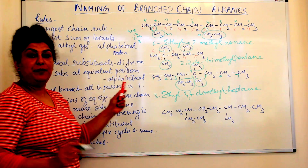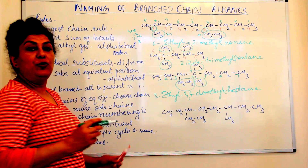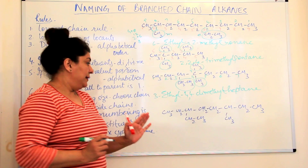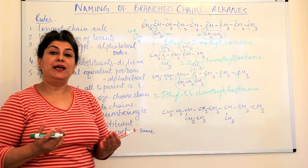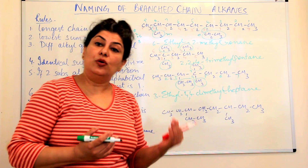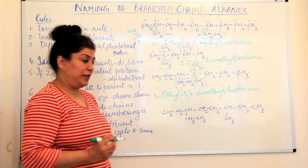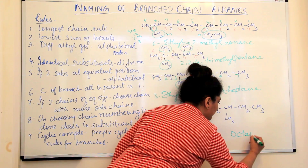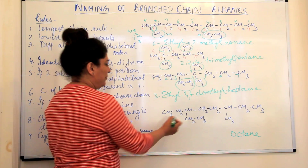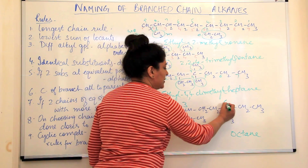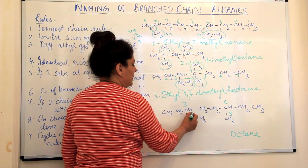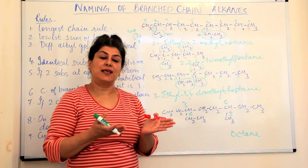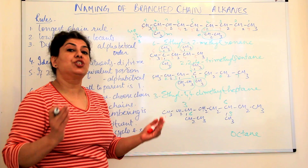The fifth rule is that if you have two substituents at equivalent positions, we assign locants such that the one which is lower in alphabetical order gets the lower locant. Equivalent positions means the sum of locants is the same from both sides. The parent chain here has 8 carbons — it is octane. Counting from both sides for the ethyl and methyl groups gives a sum of 3 plus 6 from each side, so the sum of locants is the same — these are equivalent positions.